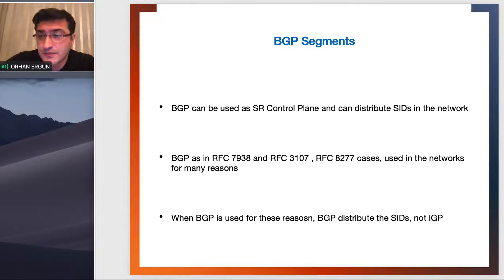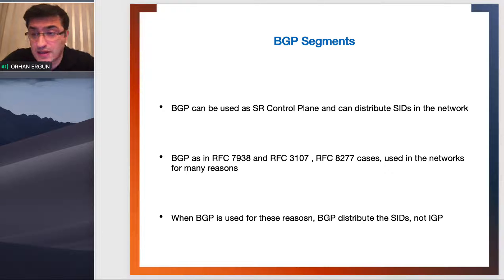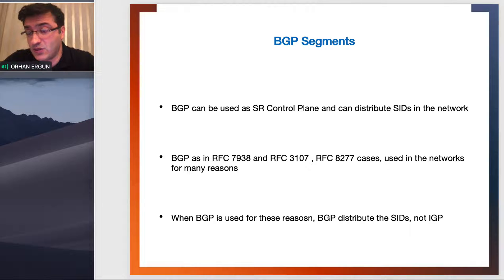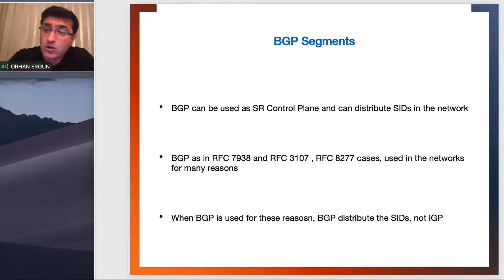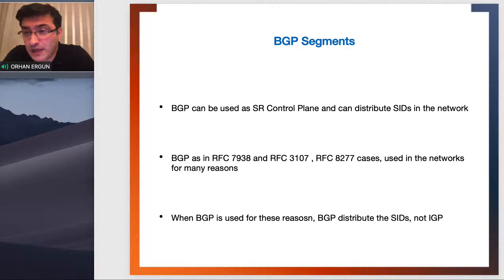Let's talk about BGP segments now. We just discussed how to distribute IGP using only IGP for the transport, covering different types of segments such as prefix segments, node segments, and anycast segments, as well as adjacency segments — which are based not just on a node or group of nodes, but on a link or group of links. Now if we are distributing the prefix via BGP, then we can use BGP as the SR control plane.